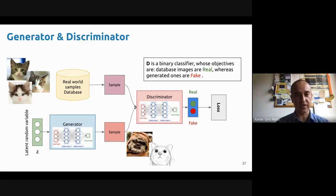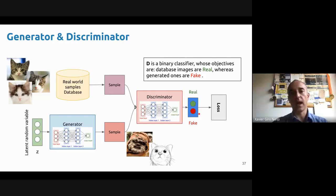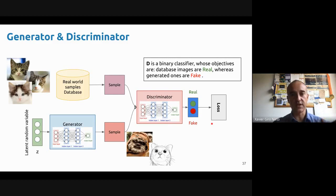Then we have the discriminator — another network. The discriminator will be predicting whether the input is real or fake. Sometimes we'll feed real data, sometimes synthetic data, and the discriminator needs to decide. We will always know what we're showing to the discriminator, so we will have a ground truth label. We want to compute a loss to compare the predictions of the discriminator with our label. Typically, we can think of the label as a one-hot encoding: one-zero for real and zero-one for fake.